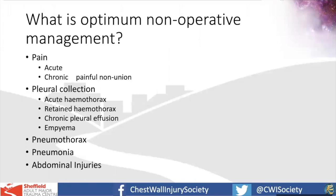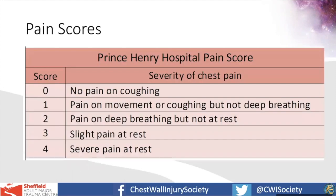What's the optimum non-operative management? The key is to recognise the complications that can occur with rib fractures — including acute and chronic pain, pleural collections of all different types, pneumothorax, pneumonia, abdominal injuries. You have to have your eye on all potential complications when considering non-operative management and how it might slide into operative management. The most important thing about pain scores is that regular pain scores — a nurse asking 'have you got any pain?' — are not enough. You need to know about pain on movement, breathing, and coughing.